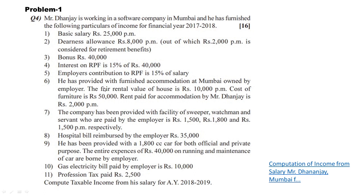Number six: He has been provided with furnished accommodation at Mumbai owned by the employer. The fair rental value of the house is Rs. 10,000 per month. Cost of furniture is Rs. 50,000. Rent paid for accommodation by Mr. Dhananjay is Rs. 2,000 per month.